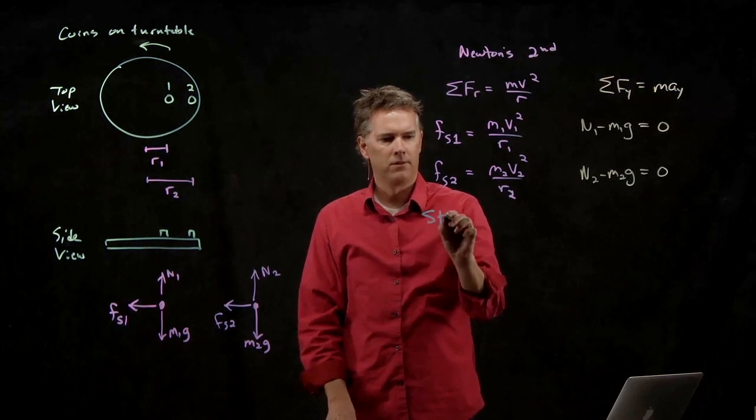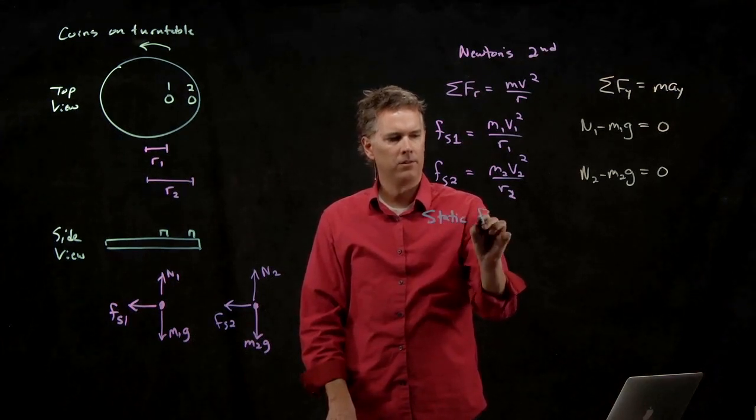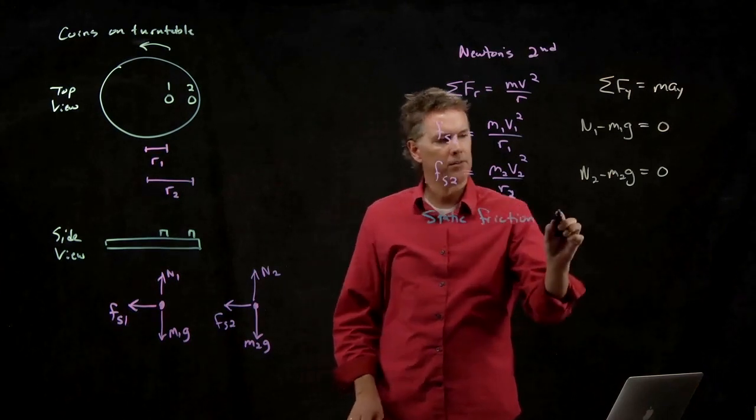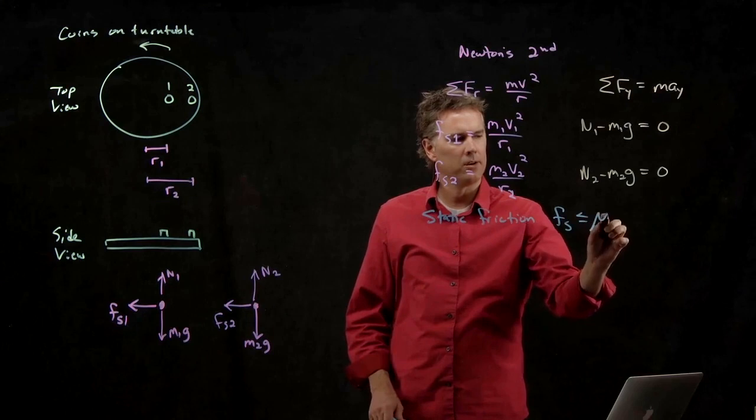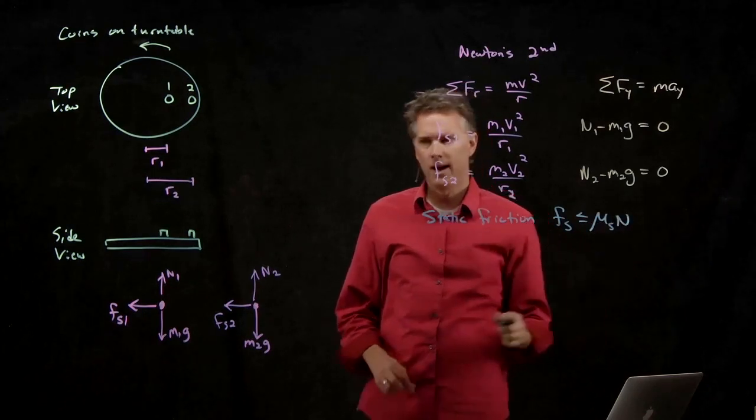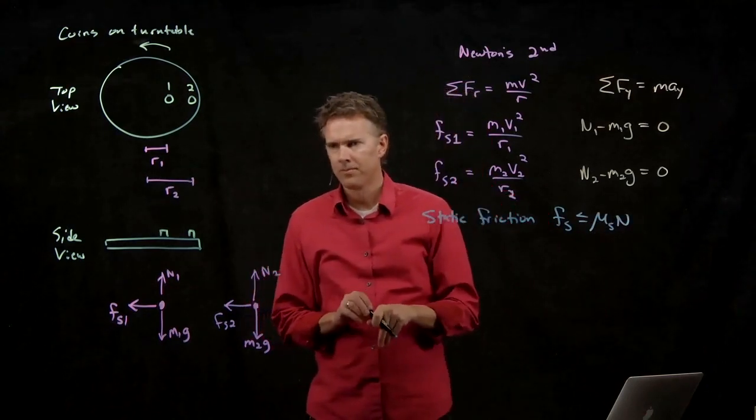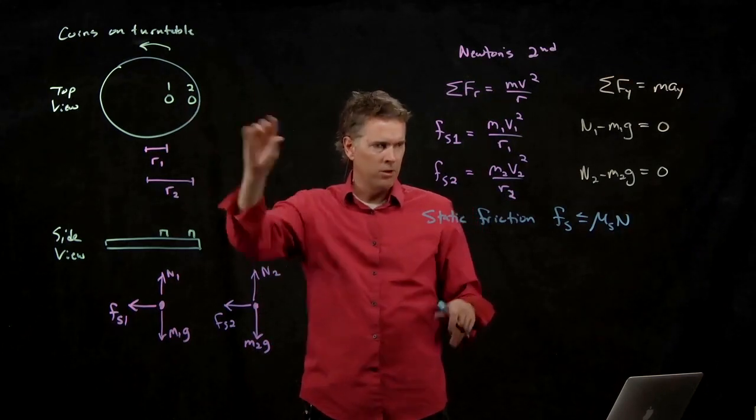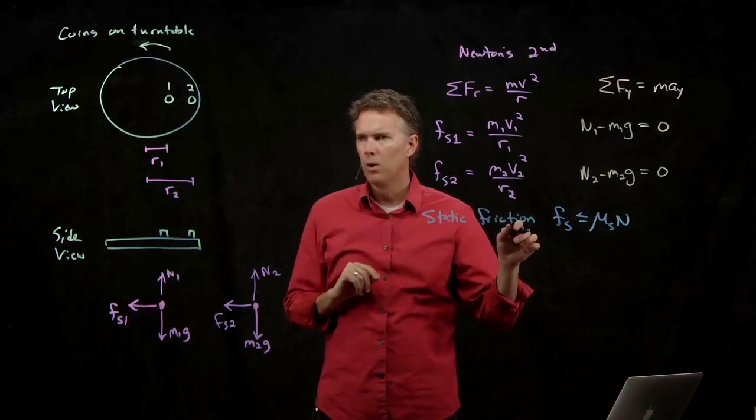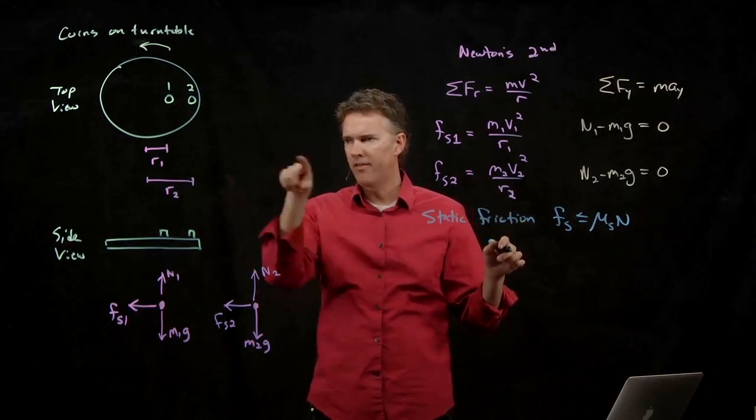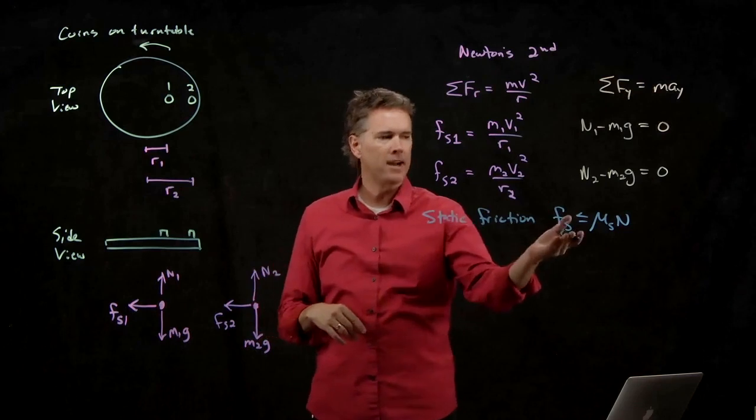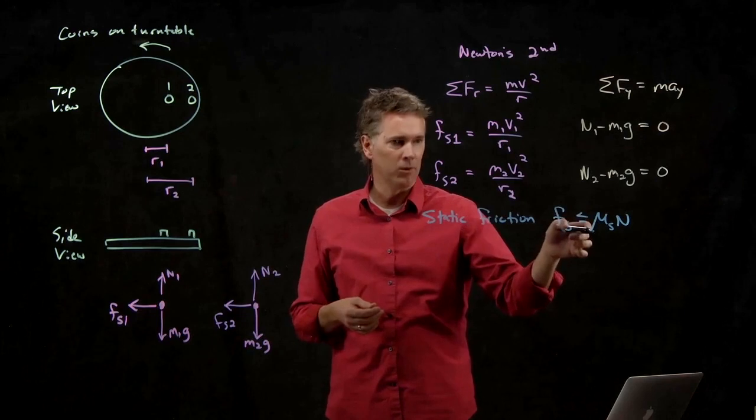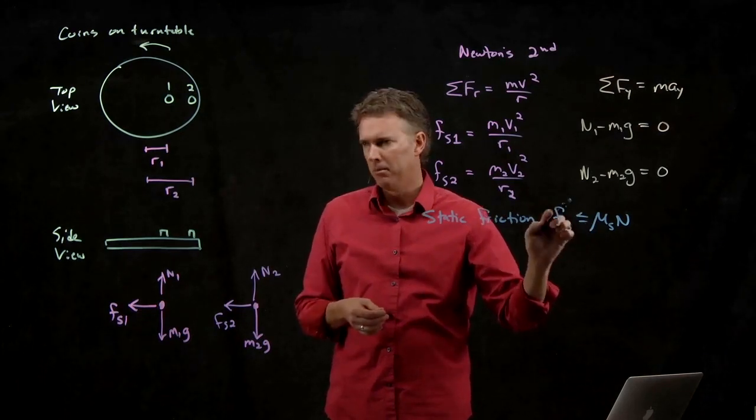Static friction. Static friction says F sub s is less than or equal to mu s times the normal force. So when the thing is not rotating, there's no static friction at play at all. When it starts spinning faster and faster, static friction starts to ramp up until it hits the equal sign. That's the maximum it can be.